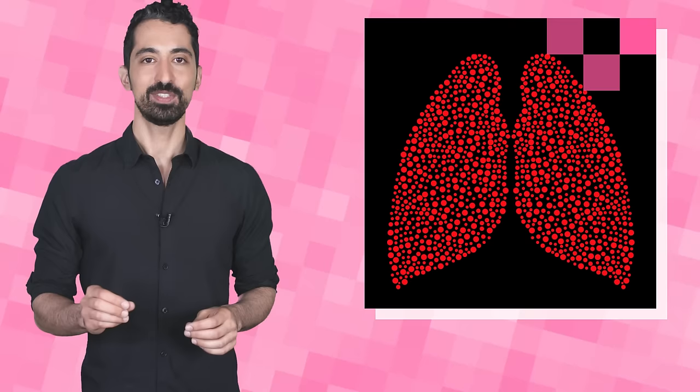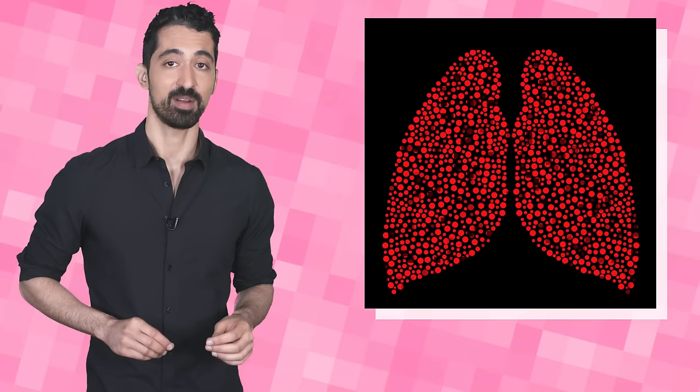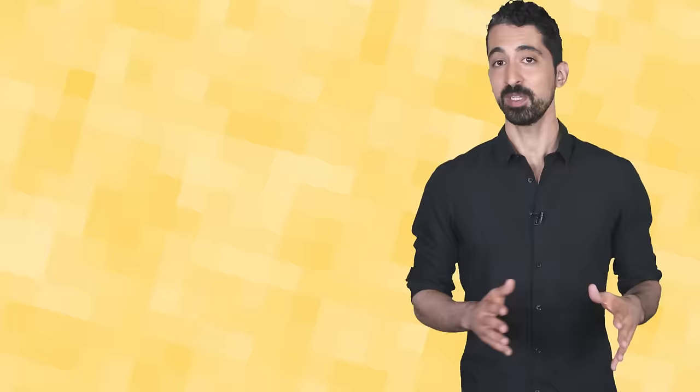Above 26,000 feet, you begin to enter what's known as the death zone, where atmospheric levels are low. Altitude sickness occurs when, at higher elevations, less oxygen molecules are in the air, making it more difficult for our bodies to get the oxygen needed to function.